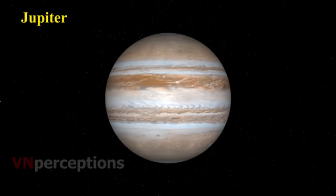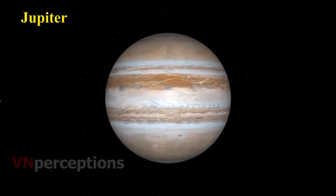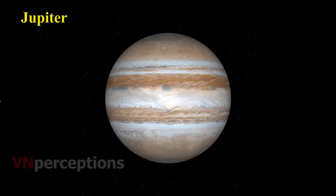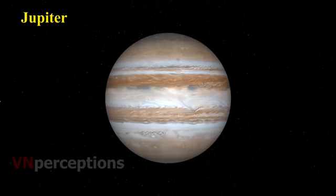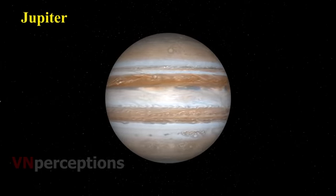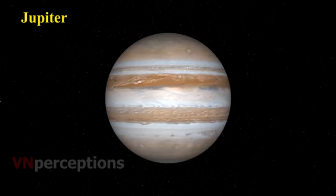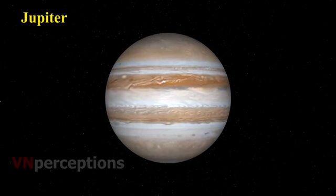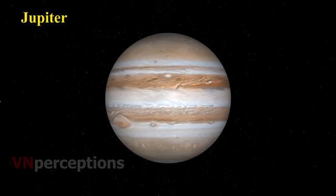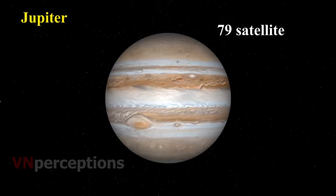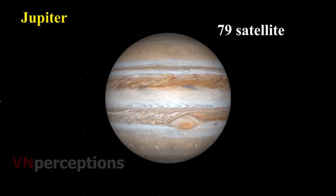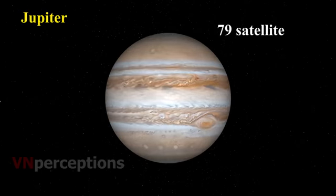You can easily recognize Jupiter as it appears quite bright in the sky. If you observe it with the help of a telescope, you can also see four of its large moons. At present, it has 79 confirmed moons.